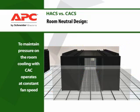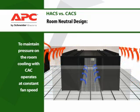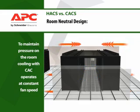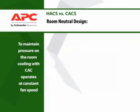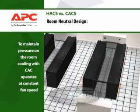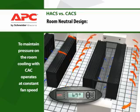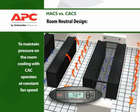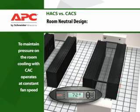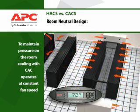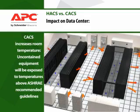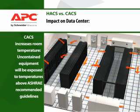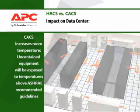The Cold Aisle Containment System is designed to isolate the cold aisle and allow the room temperature to increase, which in turn increases the return air temperature to the room cooling units. Because of floor leakage and other mixing that happens within a room cooling environment, the return air temperature cannot reach the same temperatures as in the HACS, resulting in less efficient operation of the cooling system. To improve efficiency in cold aisle containment, the temperature of the room must increase, which poses an issue for any equipment in the data center that is not contained, leaving non-rack equipment operating well above recommended temperatures.